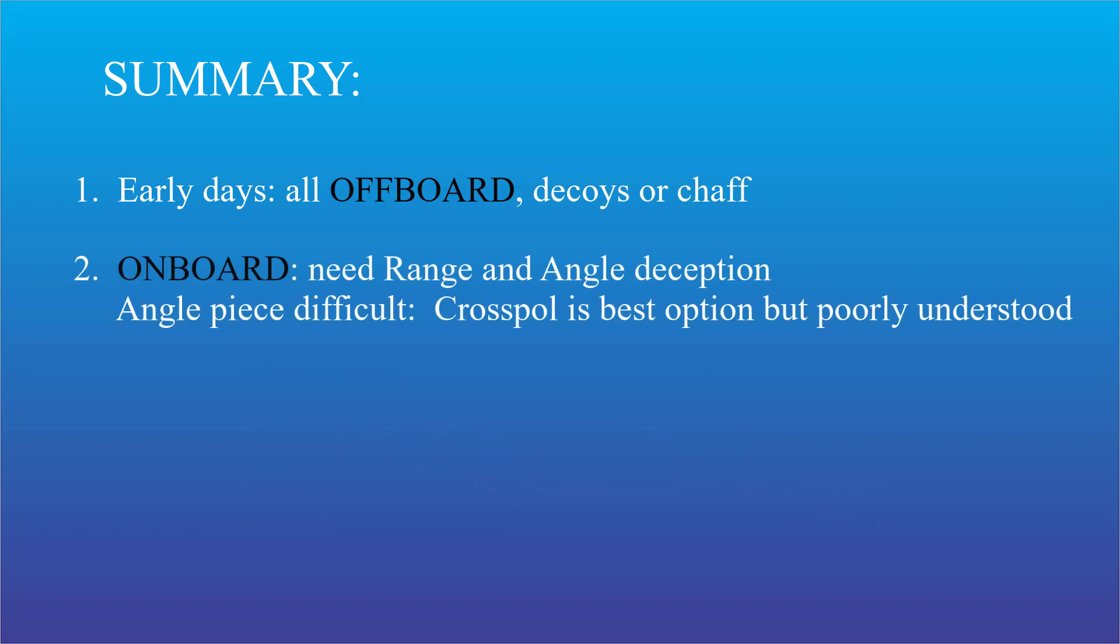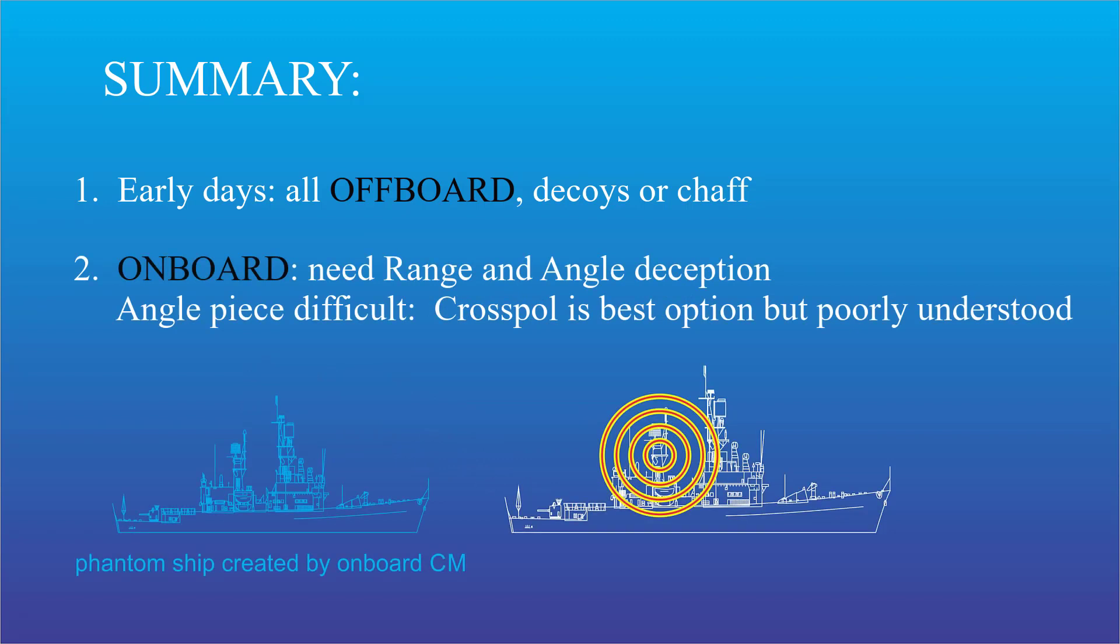Point two. Then came onboard countermeasures. Put a jammer on the ship so you don't have to throw something overboard. The jammer had to provide range deception and angle deception. Both.